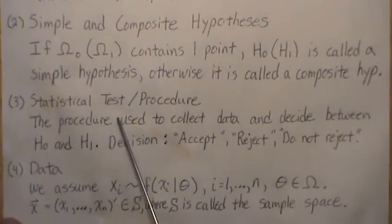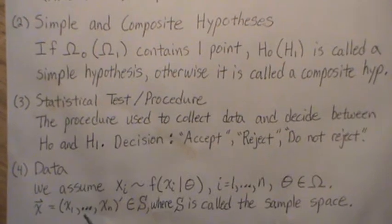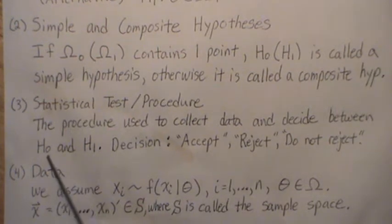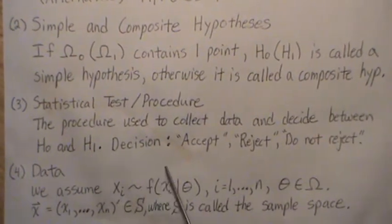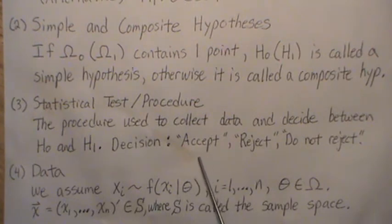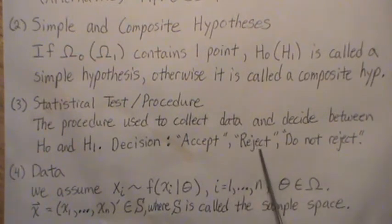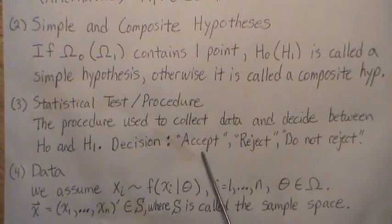The statistical test or procedure is the procedure that we use to collect data and decide between H naught and H1. The decisions that we'll make: we're going to use the phrases accept, reject, and do not reject. I tend to say reject and accept, and then occasionally say do not reject.